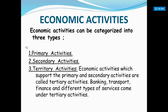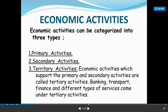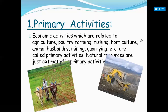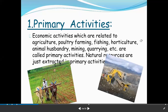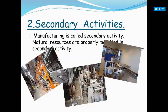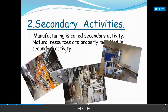We can understand through one example: growing sugarcane. That is called Primary Activities because in this process, natural resources — soil and other natural resources — are used for production. After that, sugarcane can be converted into sugar through sugar industries. It converts raw material into finished goods, and that is why it is called Secondary Activities or manufacturing.